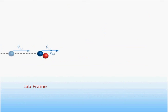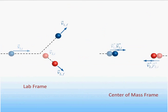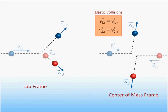Last time, we discovered that the description of collisions is often simplified when viewed in the center of mass reference frame. In particular, we showed that the speed of an object before and after an elastic collision is the same when viewed in this frame, even though its direction will be changed. We will now use this result to obtain a relation between relative speeds in a collision that will hold in all reference frames.